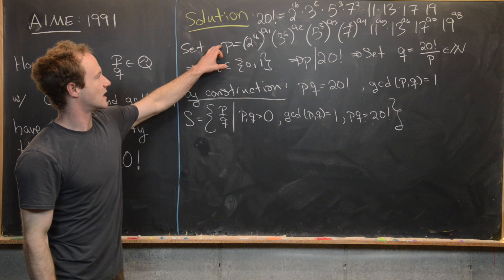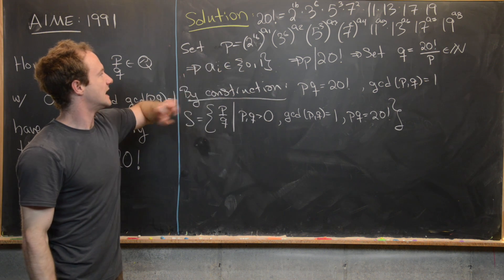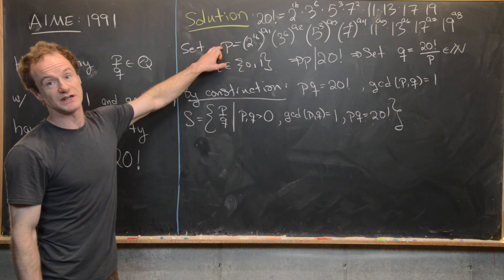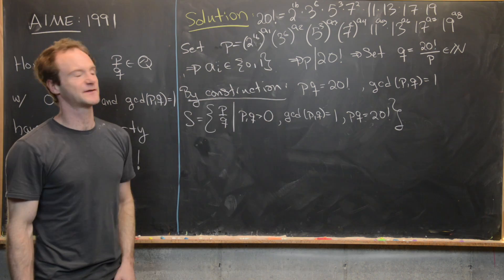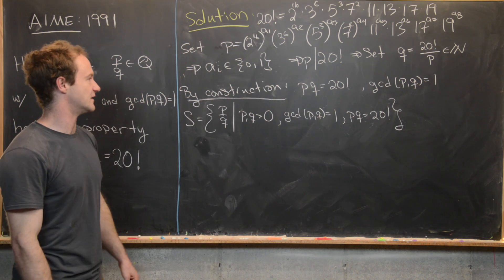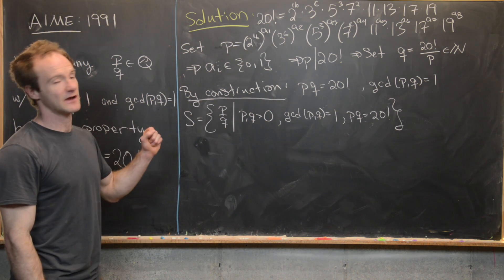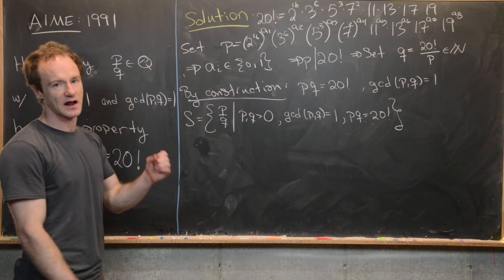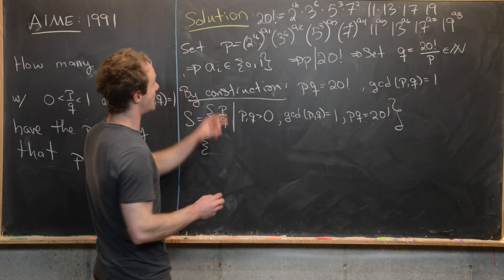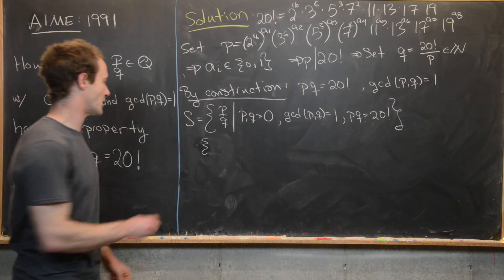So what we can see by our construction is that we really only have a choice for the numerator, in other words P, and then Q is forced by that choice of P, which tells us we have a one-to-one correspondence, in other words, a bijective map from our choices on the exponents.